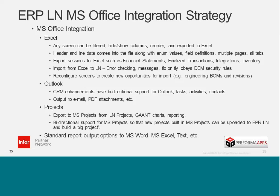With the import, it includes error checking. When you're bringing in a file of journal entries, if you mistyped a ledger account, for example, it would throw up a message and say that ledger account doesn't exist. And then you can actually fix it right there on the fly — just change the ledger account, type in the new one, hit the button, and up it goes.